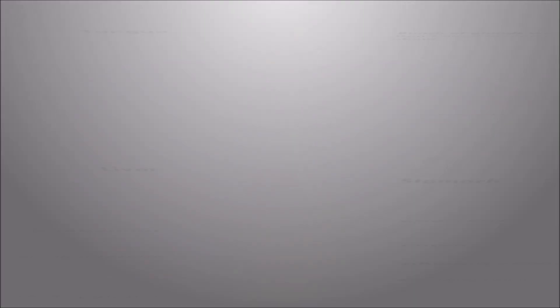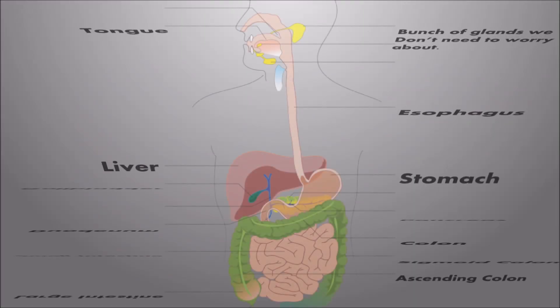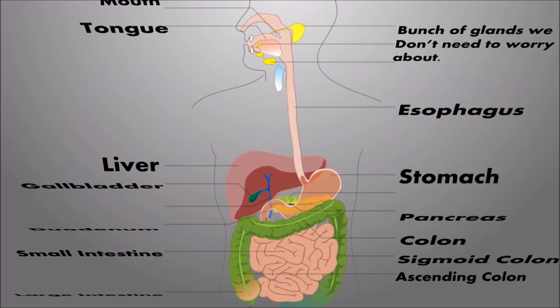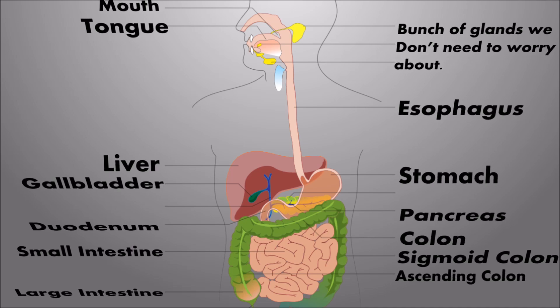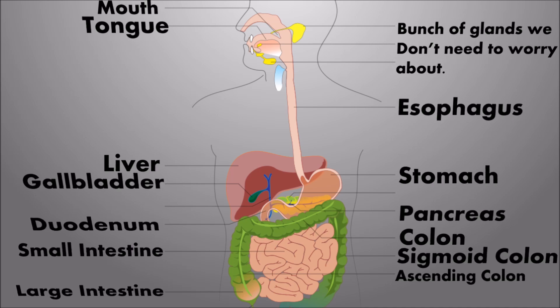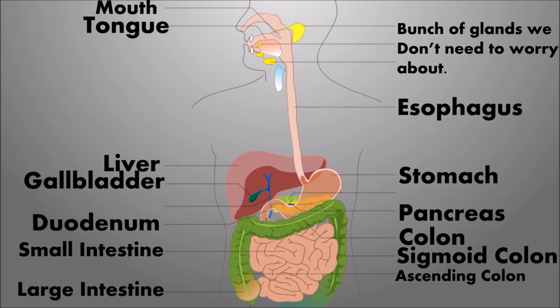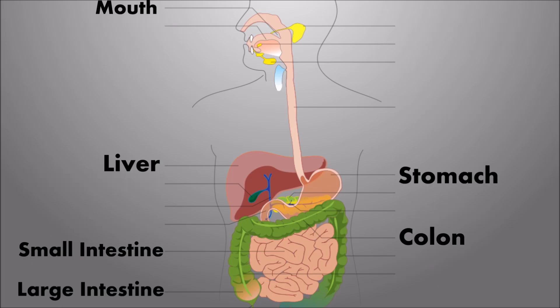However, inside the digestive system, there are other parts too. There's the mouth, tongue, liver, gallbladder, duodenum, small intestine, large intestine, esophagus, stomach, pancreas, colon, sigmoid colon, ascending colon, and descending colon, and a bunch of other glands that we really don't need to worry about. Now, let's get rid of the ones we really don't need right now. Perfect.